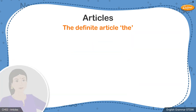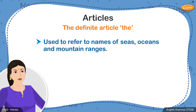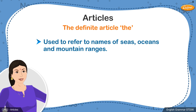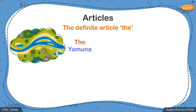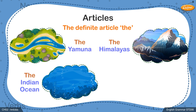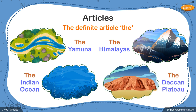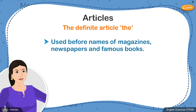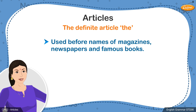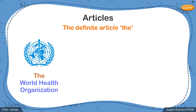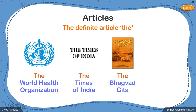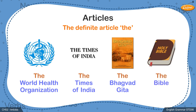We also use the when referring to the names of specific geographical features like rivers, oceans, mountain ranges, etc. For example: the Yamuna, the Indian Ocean, the Himalayas, the Deccan Plateau. Names of organizations, newspapers, and well-known books also use the definite article. For example: the World Health Organization, the Times of India, the Bhagavad Gita, the Bible, and so on.